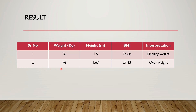In the second case, the weight of the person is 76 kg and the height is 1.67 m. The BMI after calculation is 27.33, which means that person falls under the category of overweight. This is all about our today's practical. Thank you.